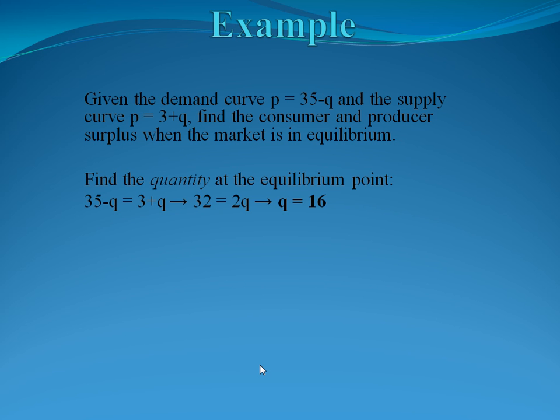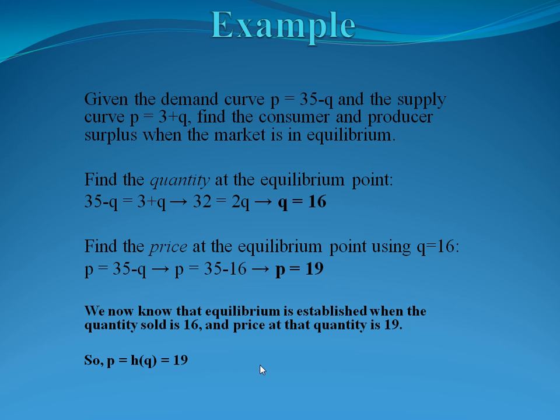To get the corresponding equilibrium price, we plug that 16 back into either equation. If we plug it into the first equation, we get 35 - 16, which is going to give us an equilibrium price of $19. The price is very important because that's one of our equations. Remember h(Q). We use that 19 as our function in both the consumer and producer surplus.